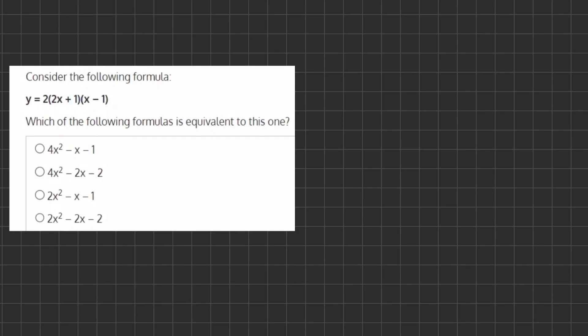In this problem we have two parentheses that are being multiplied to one another and then a value 2 that is being multiplied to everything.